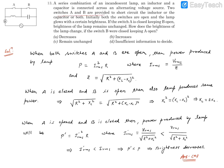Two switches A and B are provided to short circuit the inductor or the capacitor or both. Initially, both switches are open and the lamp glows with certain brightness.